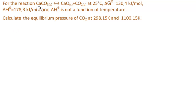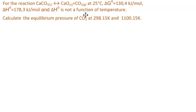The problem reads: for the reaction CaCO3 solid → CaO solid + CO2 gas at 25°C, ΔG° at standard state is 130.4 kJ/mol, and ΔH° at standard state is 178.3 kJ/mol. The change in enthalpy is not a function of temperature. We are to calculate the equilibrium pressure of CO2 at 298.15 K (25°C) and at 1100.15 K.